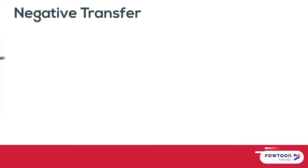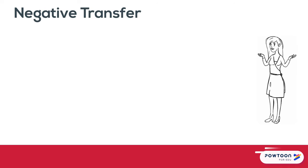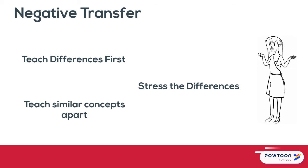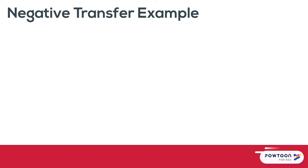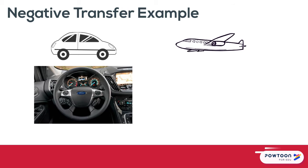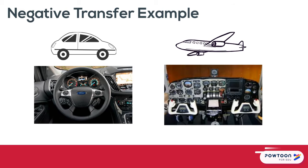Negative transfer occurs when learning or understanding in one situation hinders or stops learning in another situation. It can be avoided if we stress the differences between the concepts, teach the differences first, or teach them at different times. An example of negative transfer might be the difference of driving a car versus flying a plane. While both machines have a steering column, steering the car is done through a steering wheel, while steering an airplane is done through the pedals on the floor and not the yoke.